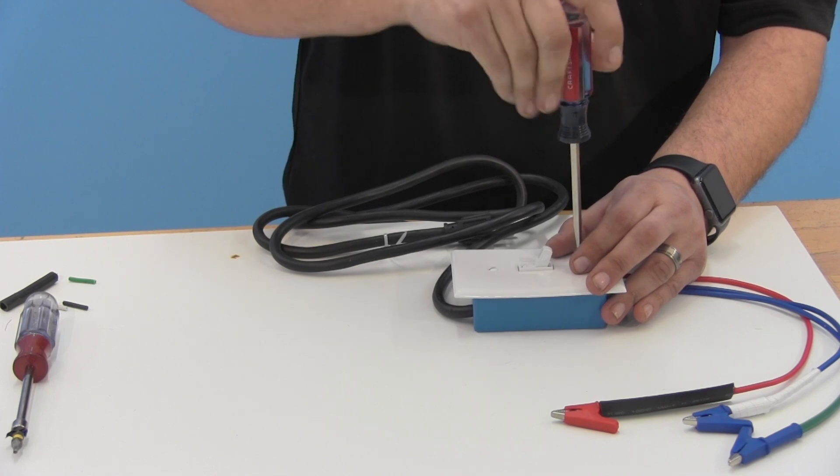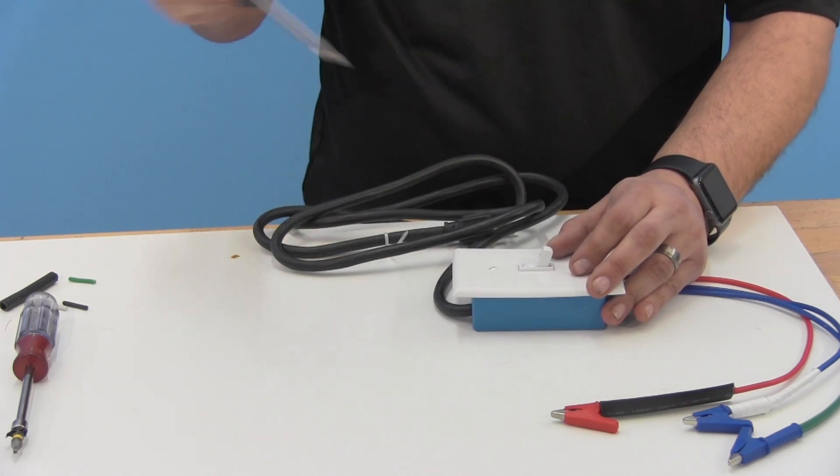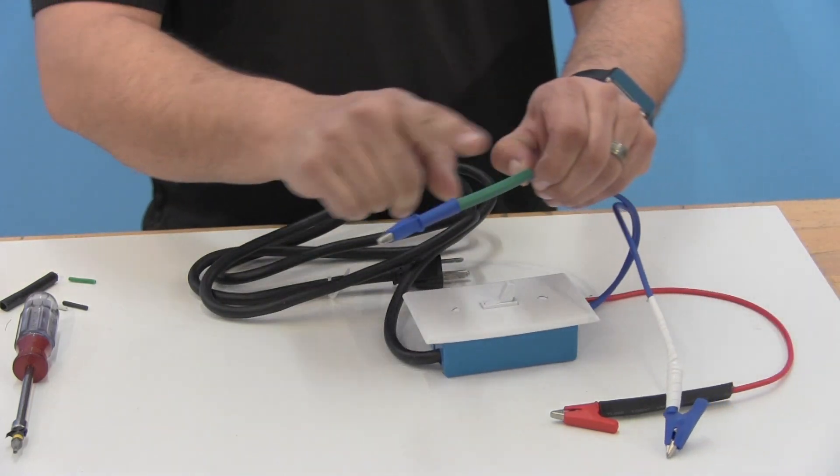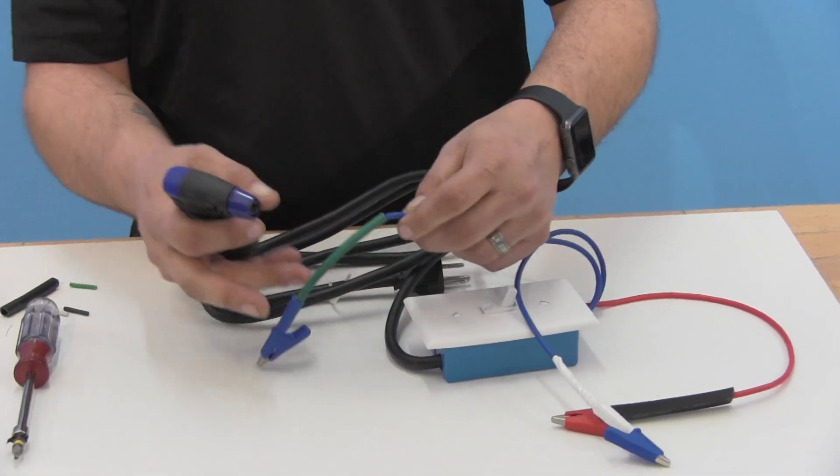Okay, now that we have this tight, the last thing that we're going to want to do before testing this is we're going to want to go ahead and we're going to want to shrink our heat shrink here. So again, I'm just going to use this small butane torch here.